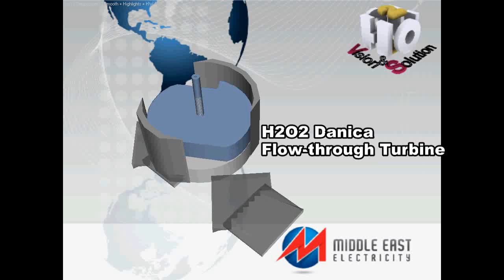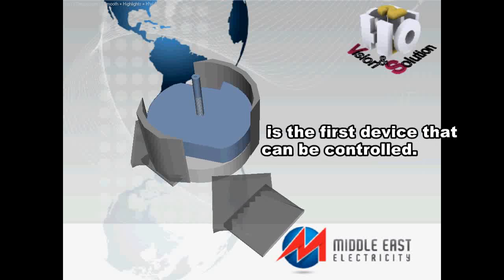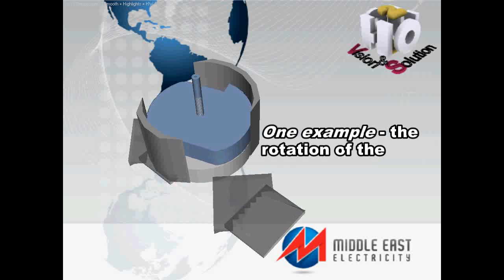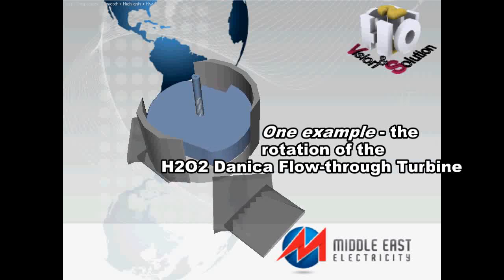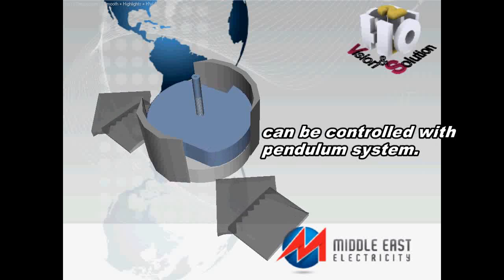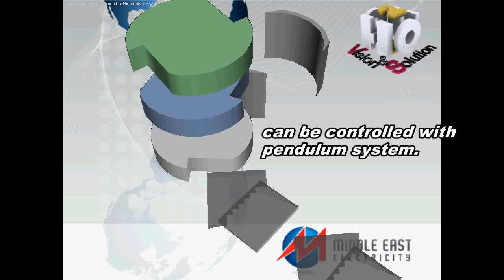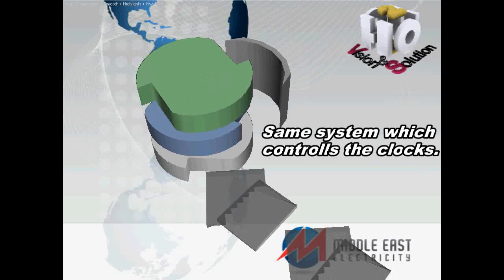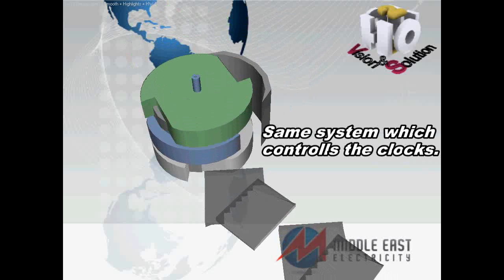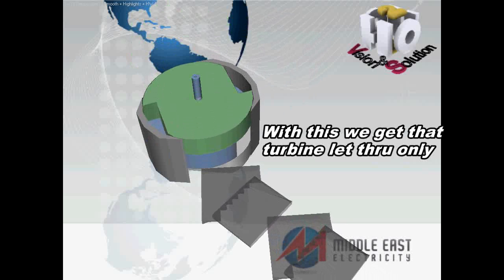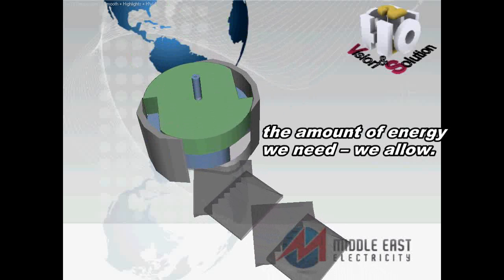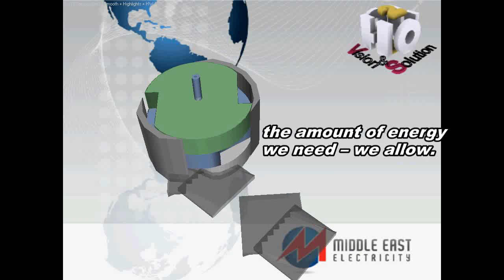H2O2 Danica flow-through turbine is the first device that can be controlled. For example, the rotation of the H2O2 Danica flow-through turbine can be controlled with a pendulum system — the same system which controls clocks. With this, we get that the turbine lets through only the amount of energy we need.